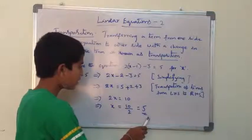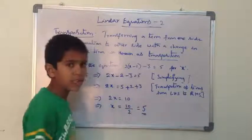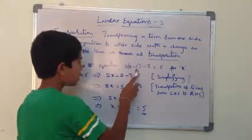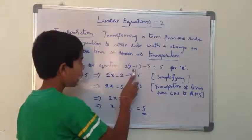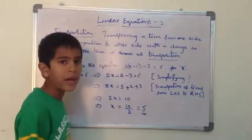We can verify the value by substituting it in the equation. Substituting the value gives 2(5-1)-3 = 2(4) = 8-3 = 5. So, the value is verified.